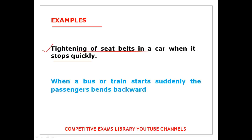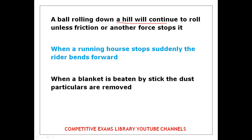Tightening of seat belts when it stops quickly. When a bus or train starts suddenly, the passenger falls backwards — this is another example. Also, a ball rolling down a hill will continue to roll unless friction or another force stops it.